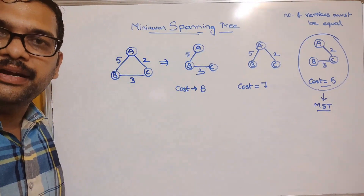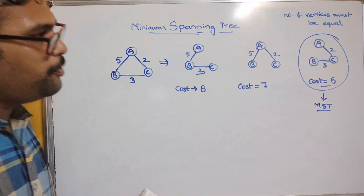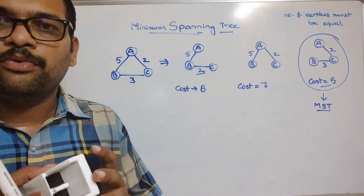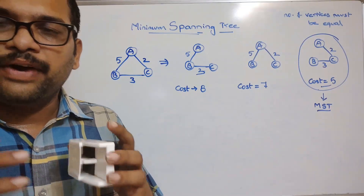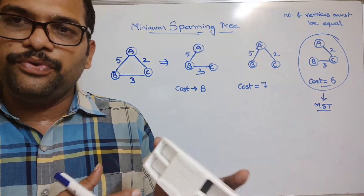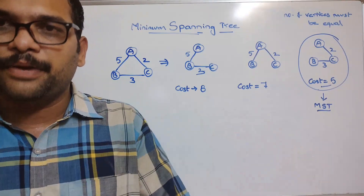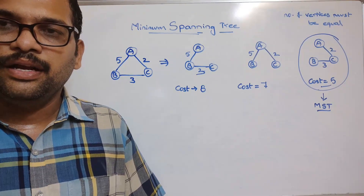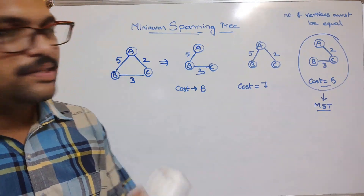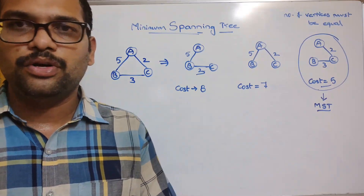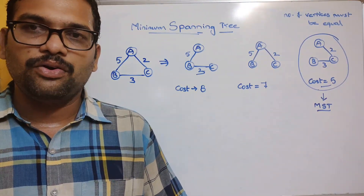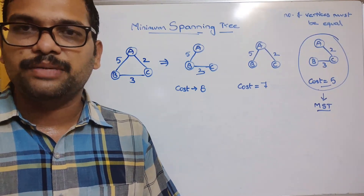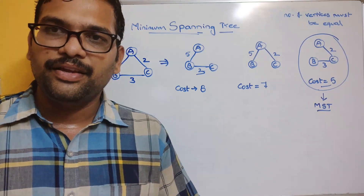In this session we've seen what a spanning tree is and what a minimum cost spanning tree is. To find the minimum cost spanning tree, we'll explore algorithms called Kruskal's algorithm and Prim's algorithm, which will be covered in the next session. If you have any doubts, post them in the comments. If you enjoyed the session, like, share, and subscribe. Thanks for watching!